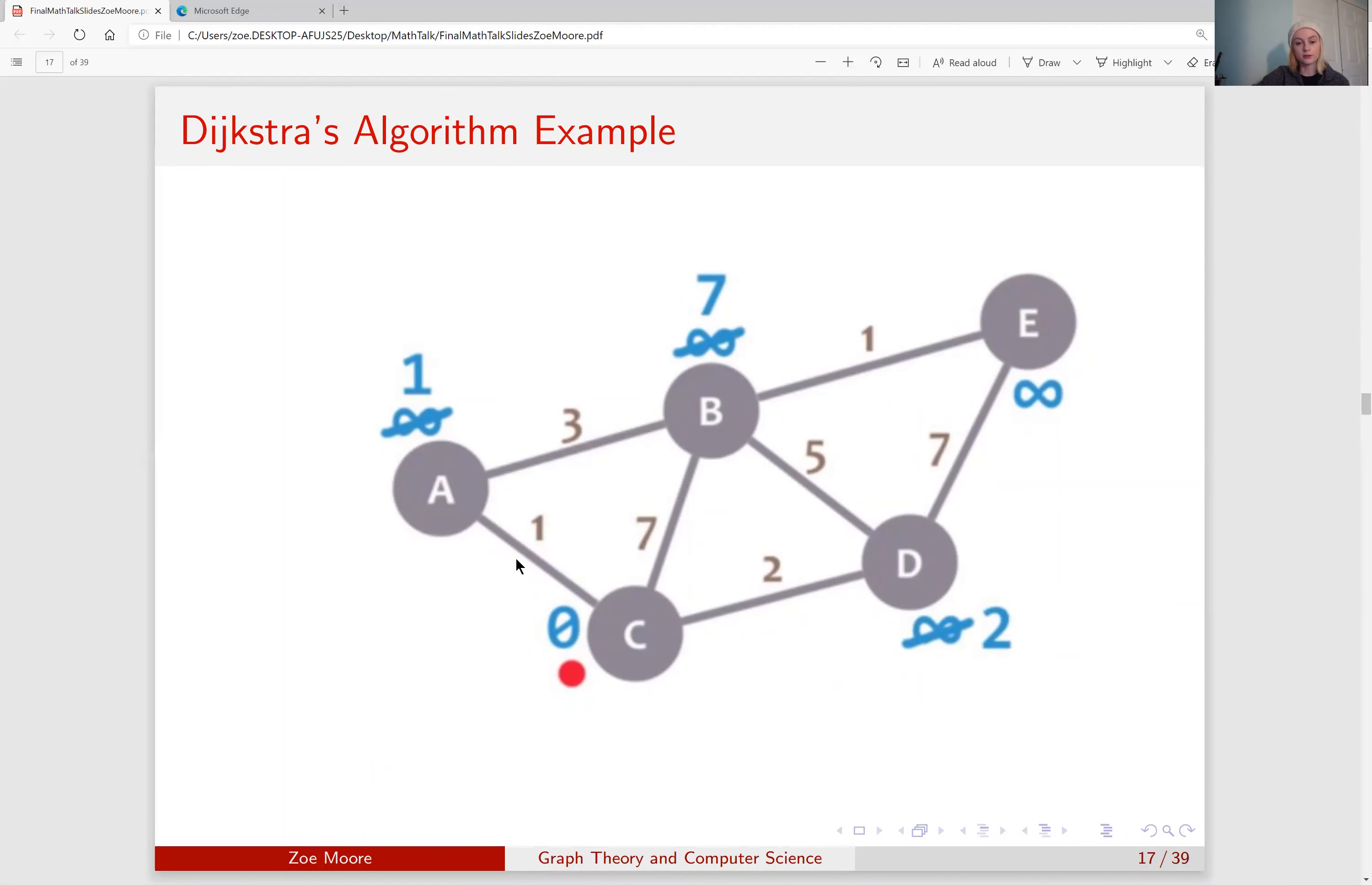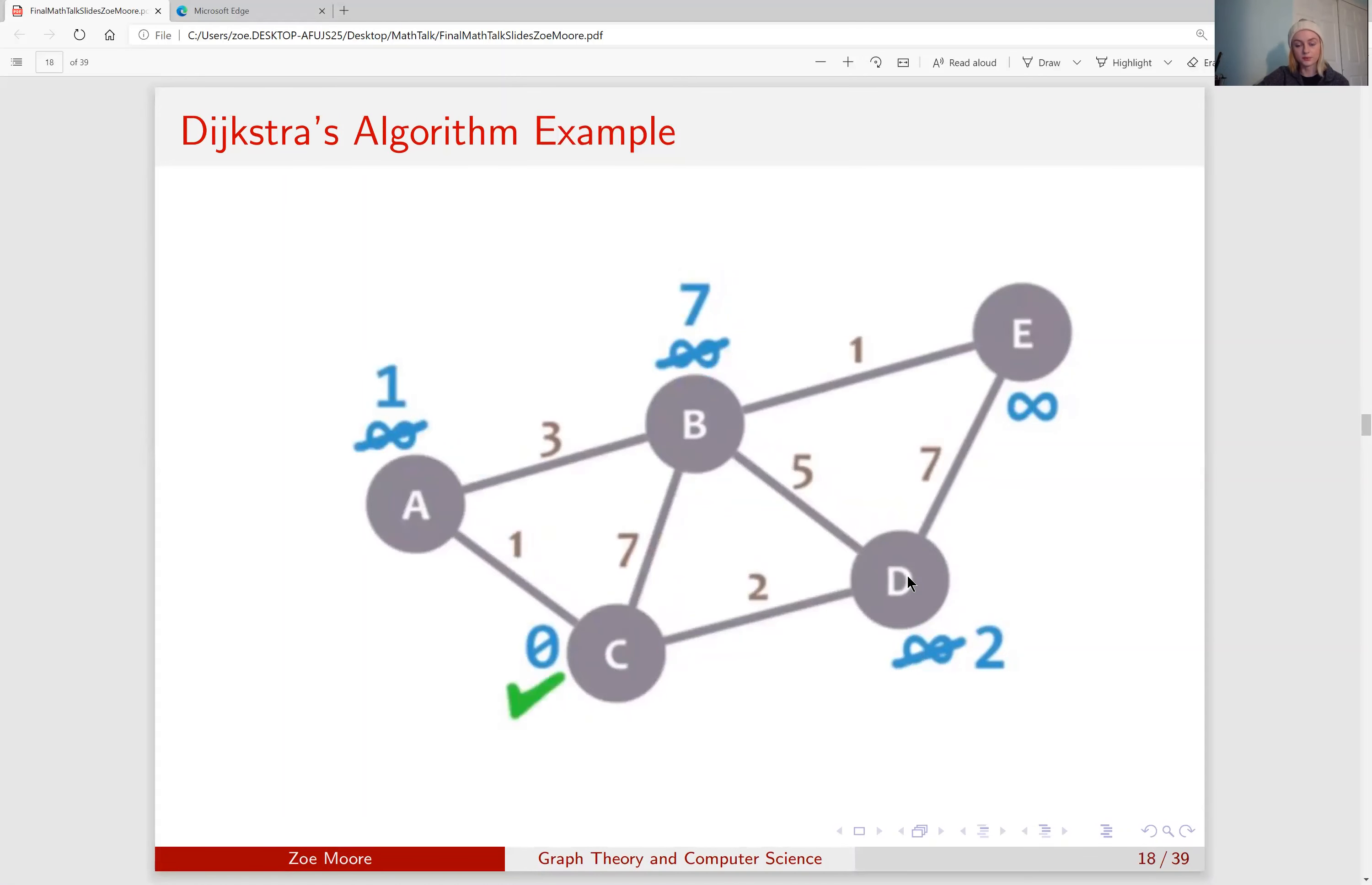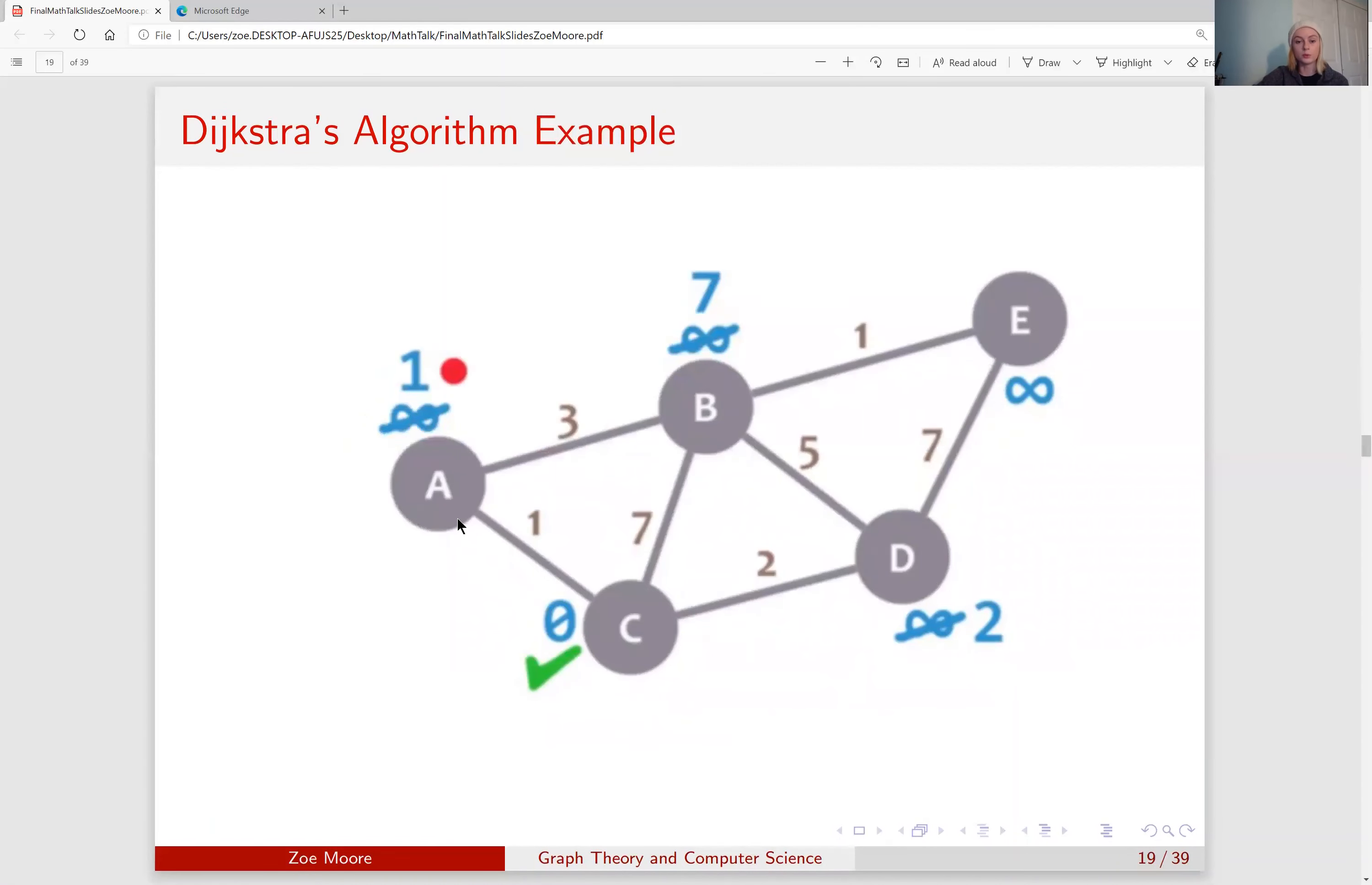Now that we have looked at every node that is connected to C, we are done with C, and we want to move on to the next node that has not completed and has the shortest distance from C, meaning that we'll move to A.